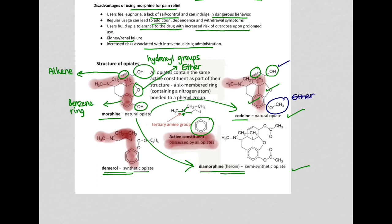If you now look at the structure of heroin, heroin also has the active constituent. It will also have the alkene, the benzene ring, the ether. But it has two different groups here as compared to morphine. These are ester groups.